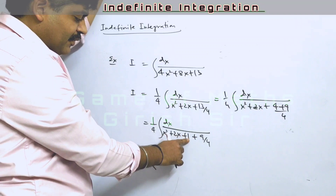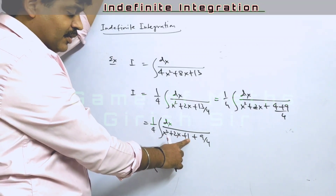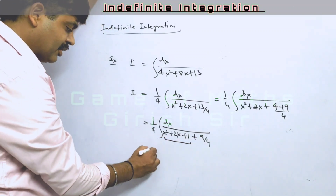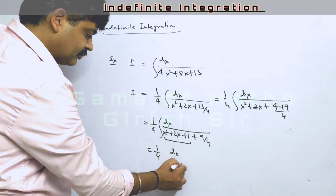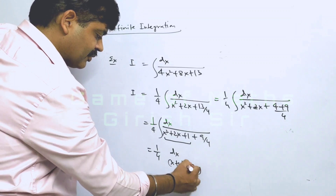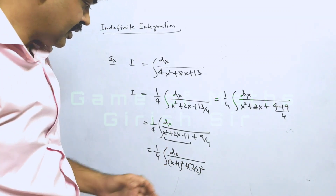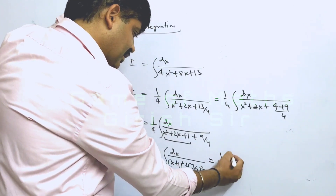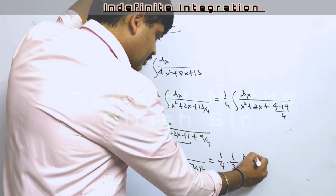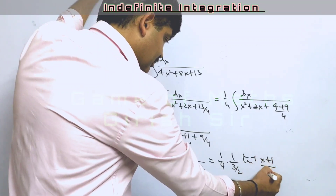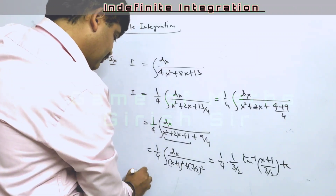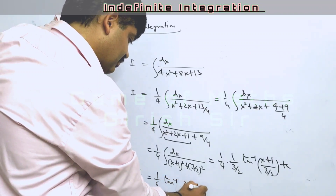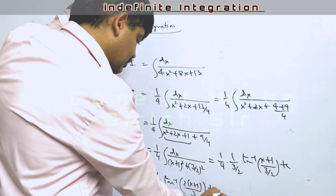We have x² + 2x, and adding 1 makes it a perfect square. So 13/4 is effectively written as 1 + 9/4, so these three terms combine into a perfect square, and 9/4 can be written as (3/2)². It is again the standard type dx/(x² + a²). Using the formula directly, the answer is (1/6) tan⁻¹((x + 1)/(3/2)) + c.